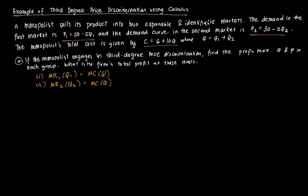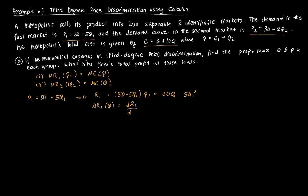We have our demand function, so we need to get revenue first. Using P1 equal to 50 minus 5Q1, revenue R1 equals 50Q1 minus 5Q1 squared. Taking the derivative DR1 with respect to Q1 gives marginal revenue MR1 equal to 50 minus 10Q1.